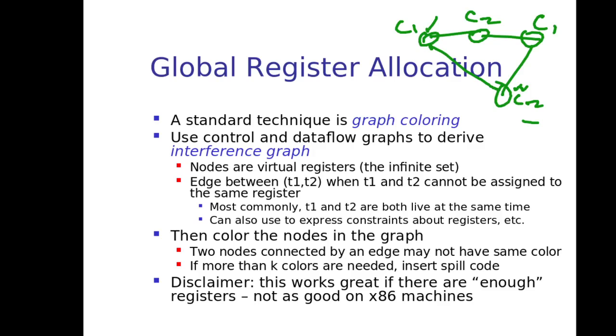If at all we will get k is a value and we can color the nodes with k colors, in that case we can use the k registers for allocation of these things. But still we can have if this graph will give you more than k colors are required, in that case we can insert some spill code, we can use some extra registers. This will work only if we have enough number of registers. If we have constant and particular set of registers only, in that case it may create some problem. But still it works fine.